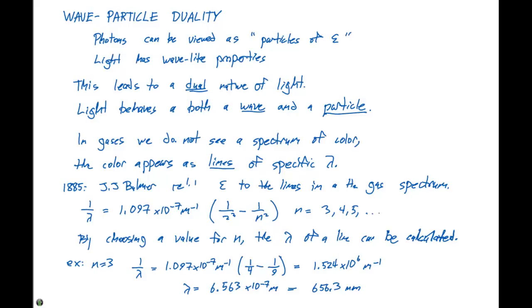Physicists at the time observed line spectra for the elements. They had this equation for calculating the wavelength of hydrogen, but they couldn't relate any of this to physical ideas. It became very frustrating until Niels Bohr came along and came up with the Bohr model for the hydrogen atom. That's what we'll talk about in the next video.